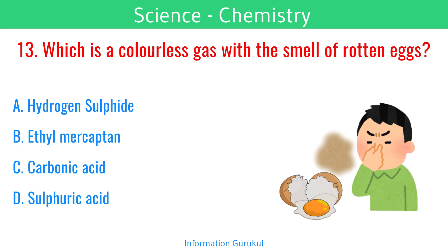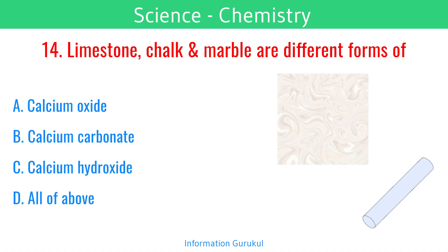Which is a colorless gas with the smell of rotten eggs? Hydrogen sulfide. Limestone, chalk and marble are different forms of calcium carbonate.